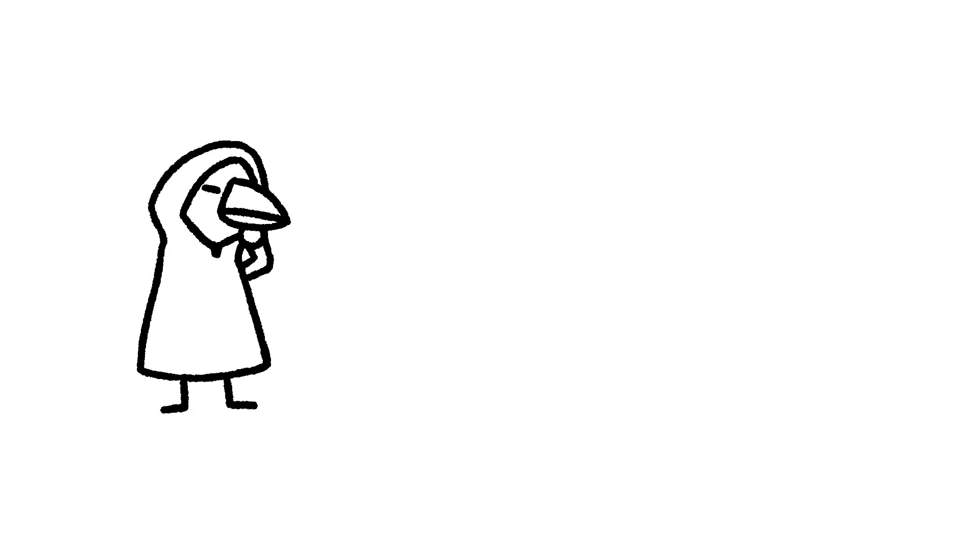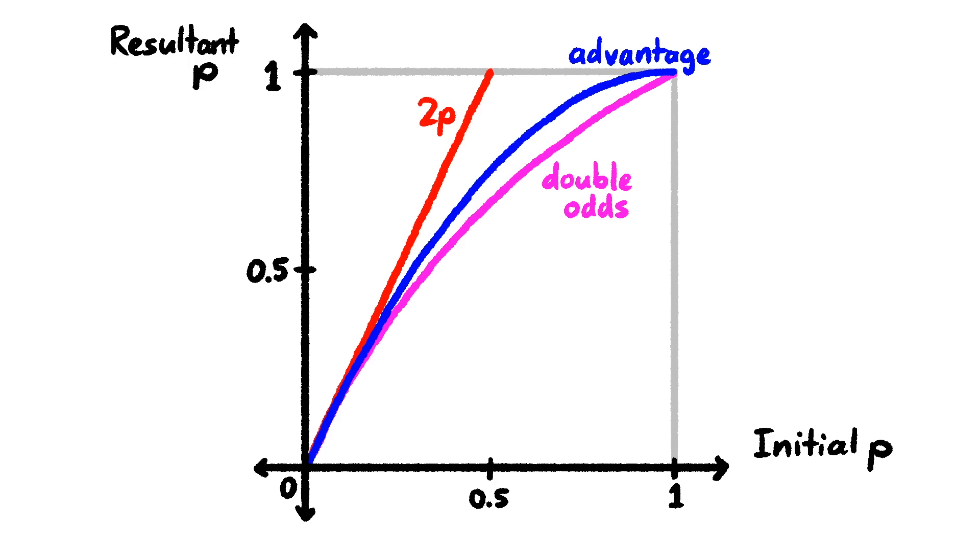It's also important to recognise that a lot of the time when we say things like twice as likely, we're referring to very small probabilities, like the chance of contracting a disease, or winning the lottery. And for these small probabilities, there isn't a problem with twice as likely being badly defined. The three operations of doubling the probability, doubling the odds, and taking advantage, are all approximately equal when the initial probability is close to zero. And that's because these functions all have the same first order Taylor expansion, if you know what that is. And even though double odds might make more sense mathematically, I think when we say twice as likely, we often mean advantage, because it's literally twice as many opportunities to get the result you want.